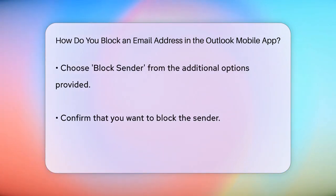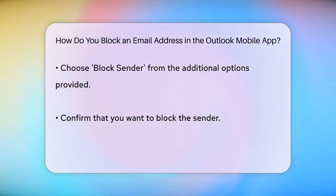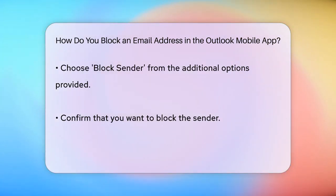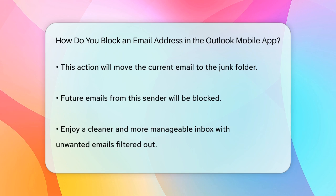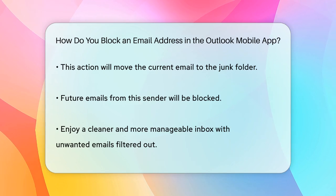By selecting Block Sender, you are telling Outlook to block all future emails from this specific sender. This action will move the current message to the junk folder and prevent any new emails from this sender from reaching your inbox.